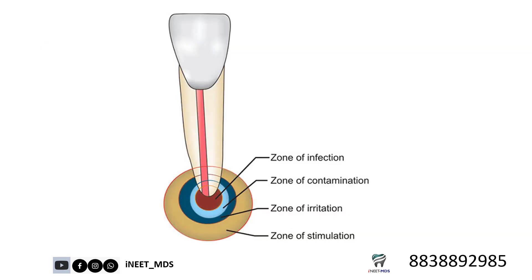You should also know about the Fish zone of the periradicular tissue in case of a well-defined granuloma. From inside to outside, you can remember it with the mnemonic ICIS: zone of Infection, zone of Contamination, zone of Irritation, zone of Stimulation.